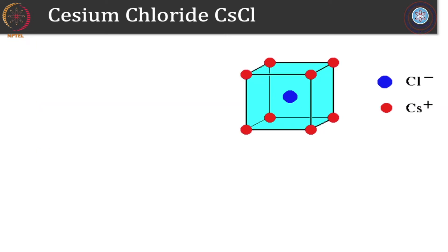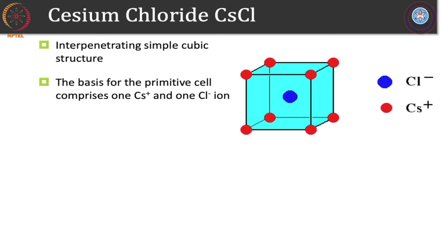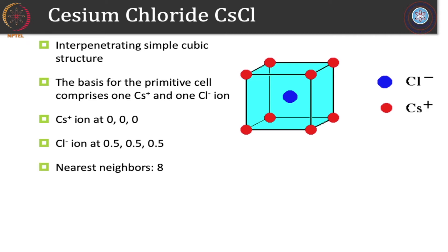Now let's look at the cesium chloride structure. Here the cesium atoms are at the corners of the cube and chlorine is at the center, so it is simple cubic. Cesium makes a simple cube and chlorine makes another simple cube, offset by (1/2, 1/2, 1/2) — interpenetrating simple cubic structures. The basis for the primitive cell comprises one cesium ion at the origin and one chlorine ion at the center of the cube. The chlorine ion at the center has eight cesium neighbors at the same distance, so there are eight nearest neighbors to each ion.